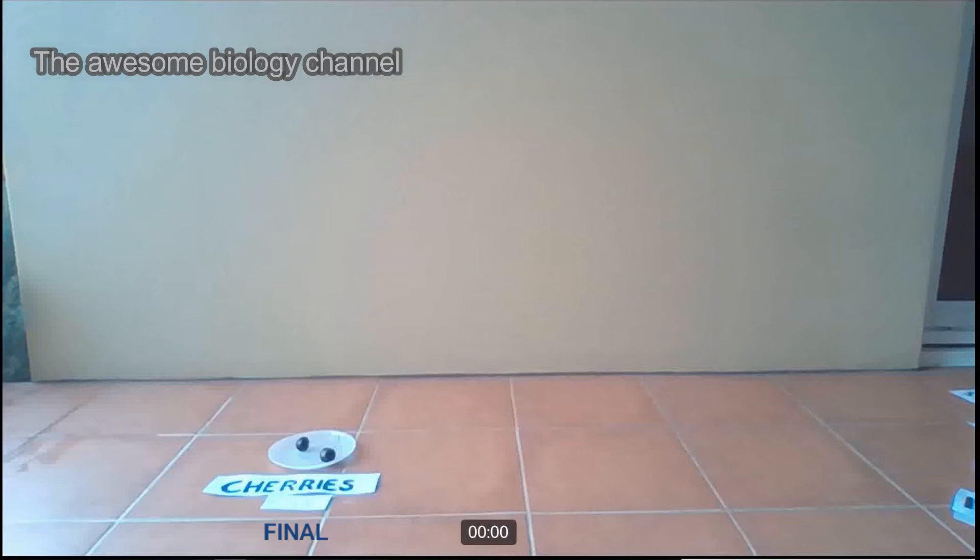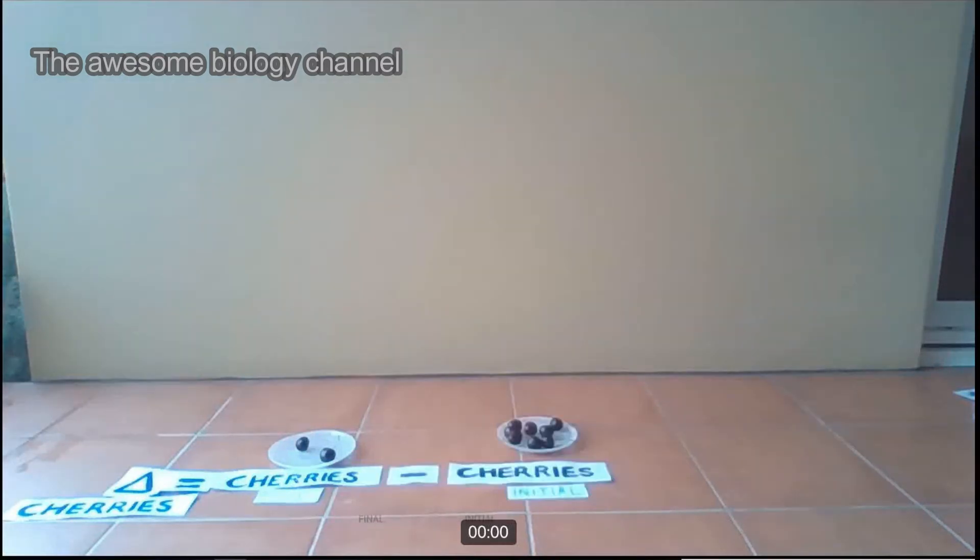Now the way that we usually express change in a reaction like this is with this guy, delta. You can express delta, or the change in a reaction, by taking the final number of cherries and subtracting from that the initial number of cherries. And in this case, that delta, or the change, will be a negative number. Because the number of cherries we finished with was smaller than the number of cherries that we started with. So our delta cherries, in this case, is negative six.